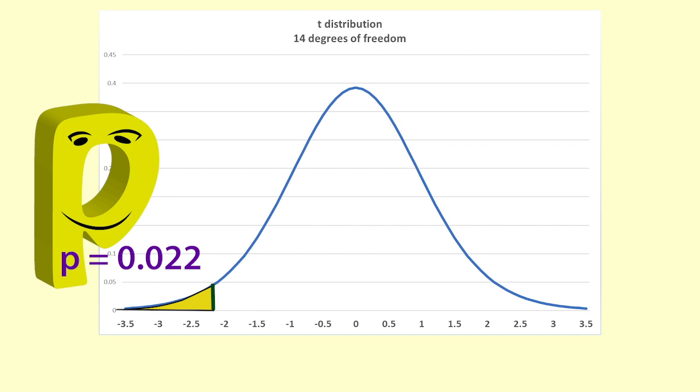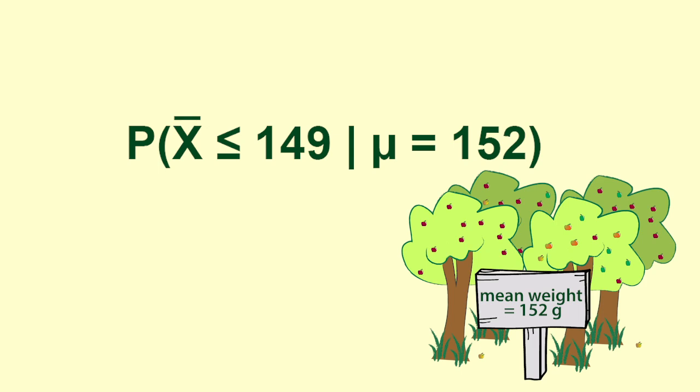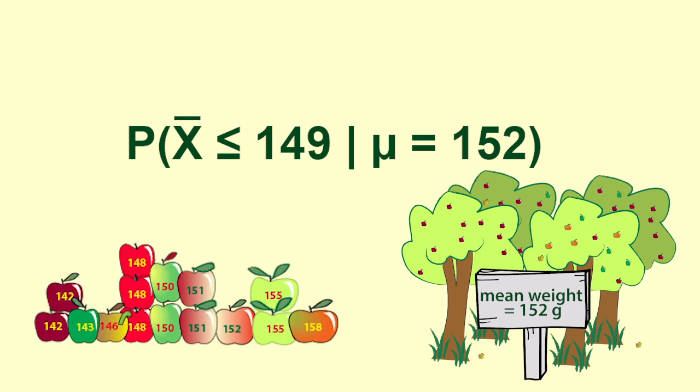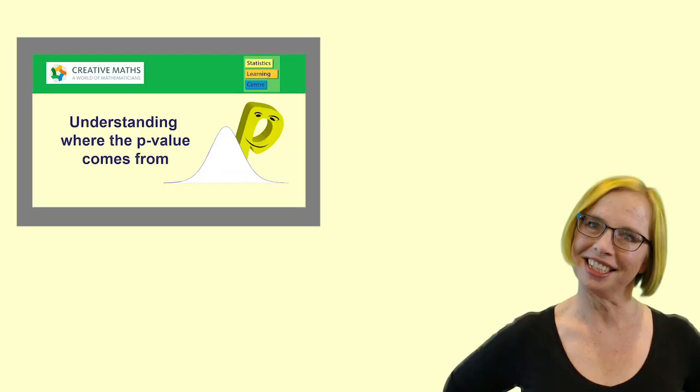This p-value tells us that if the population mean for all the apples in the orchard is 152 grams then the probability of getting a result this much smaller than 152 or worse is 0.022, about 2%. This video explained where a p-value comes from.